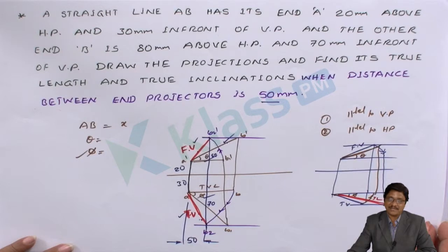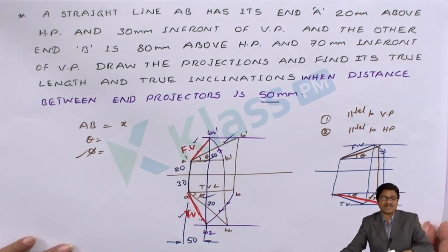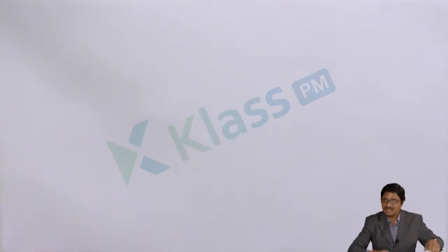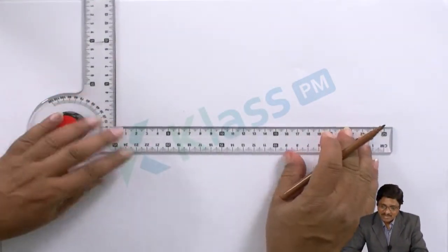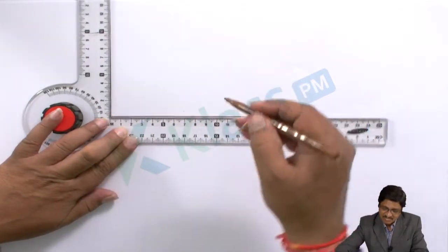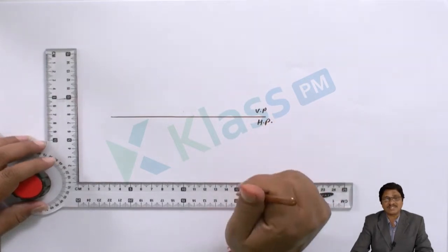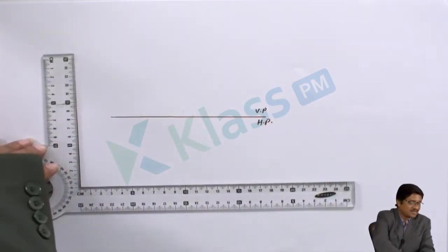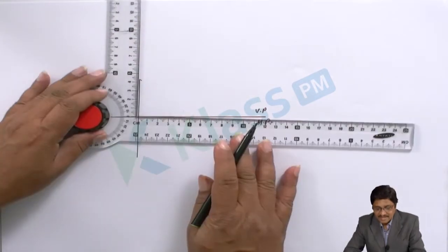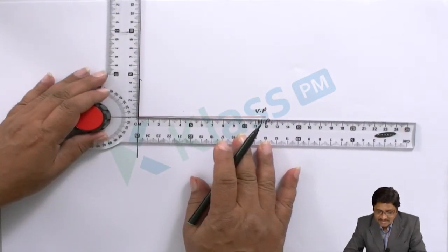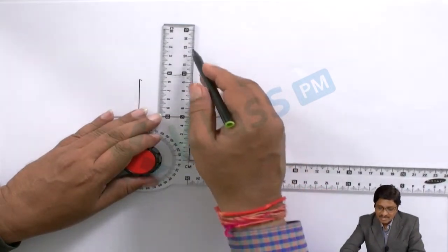What has been given here? A straight line AB — line length is not known, end points given clearly for both A and B. With the given information, I have to construct the drawing. First, draw the XY reference line. Identify the vertical plane and horizontal plane. The distance between the projectors is given as 50 mm, so blindly draw a projector at a distance of 50 mm. Because the distance between the projectors is 50 mm, at that distance I have to draw one more projector.